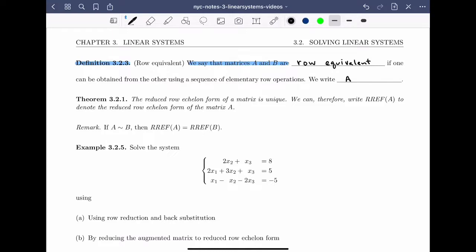We write A tilde B, but we say A is row equivalent to B. There's an important theorem which will prove in chapter 4 that says that the reduced row echelon form of the matrix is unique.